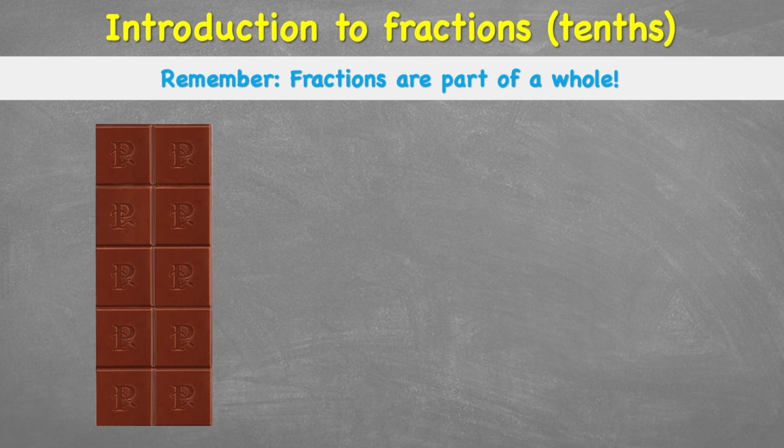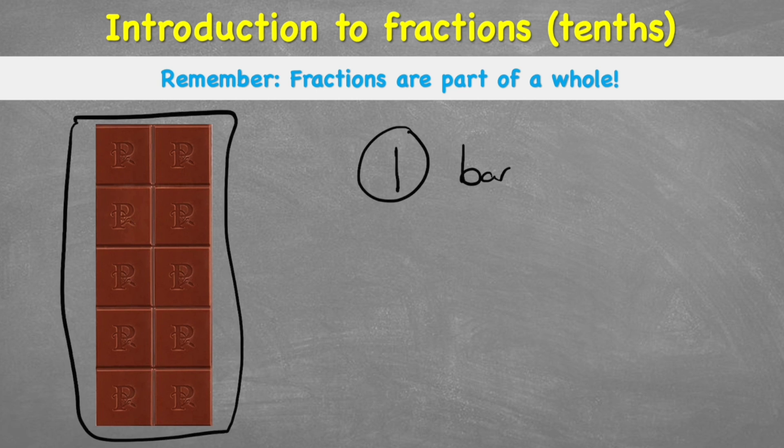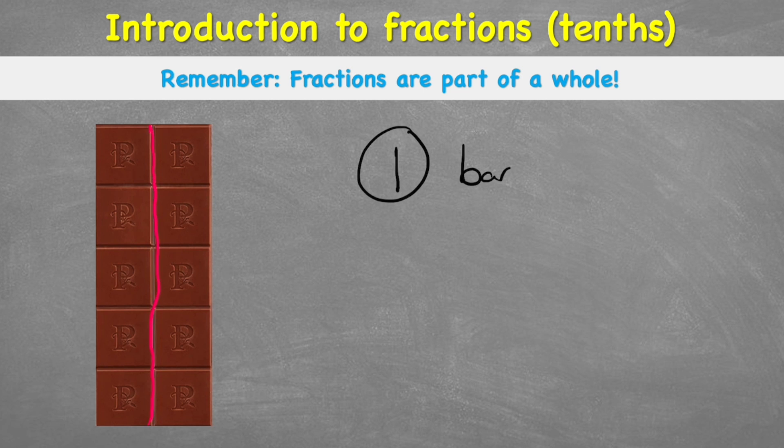Now let's have a look at it another way. This is my one. I have one bar of chocolate. So at the minute, I have a whole one. However, we can see that it's been cut into ten even pieces. I have one, two, three, four, five, six, seven, eight, nine, and ten. So I have ten equal pieces.